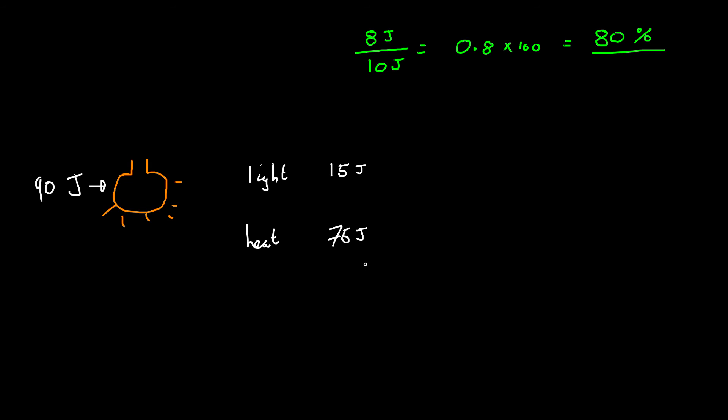So work out the efficiency. Pause the video now and have a go. Okay. So I hope you had a go. What we do is we use exactly the same equation. We say that the useful energy of a light bulb is going to be the light. And so on top we are going to have 15 joules. We are going to divide that by our total energy in. And that will give us an answer of 0.17 to 2 significant figures. So I'm only rounding here to 2 significant figures. And if I want that as the percentage efficiency, I'm going to multiply that by 100, and that will give me 17% efficient to 2 significant figures.